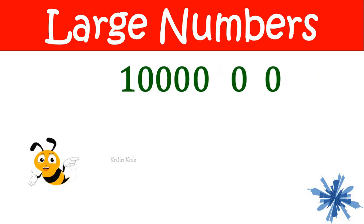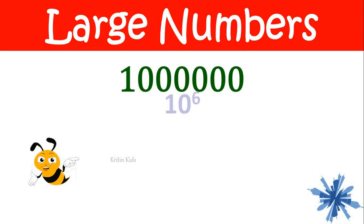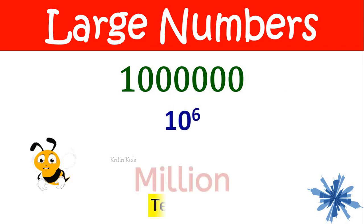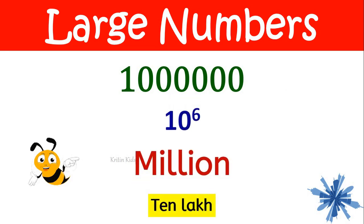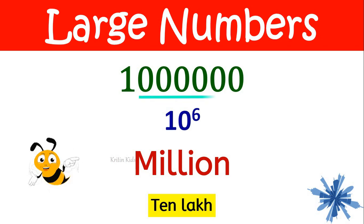Then if I add one more zero, it becomes million. Million is also called as ten lakh. One followed by six zeros gives us one million.